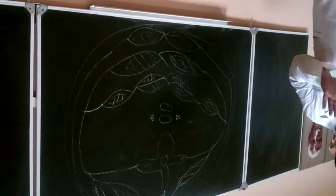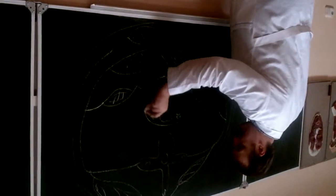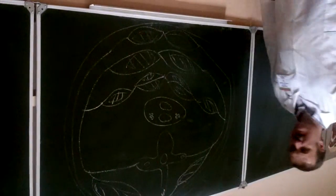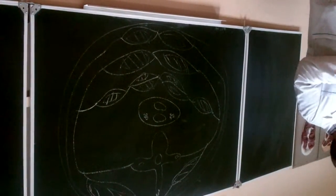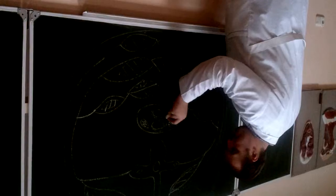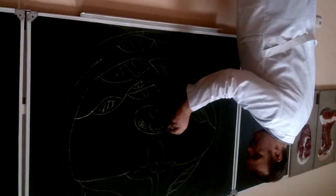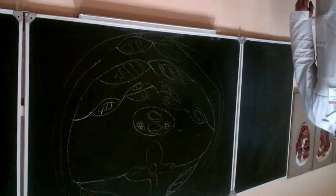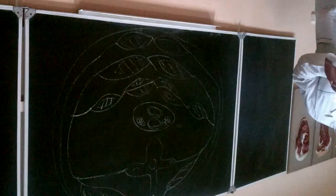Fourth fascia — fascia endocervicalis. Fascia endocervicalis has two layers: parietal, which surrounds all of these organs, and visceral, which surrounds each of these organs individually. Parietal and visceral layers together form one fascia — fascia endocervicalis.